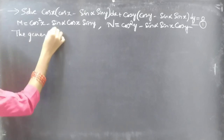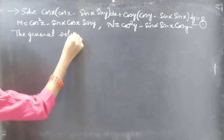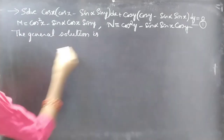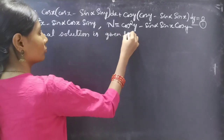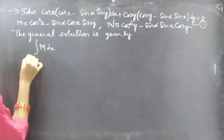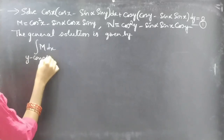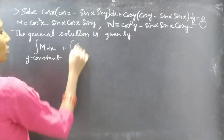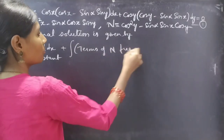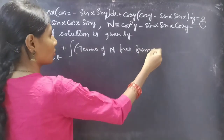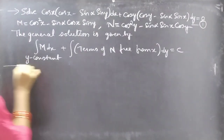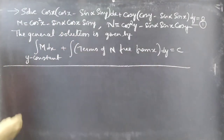Since the given differential equation is exact, we will find the general solution. The general solution is given by: integral of M dx treating y as constant, plus integral of terms of N free from x, with respect to dy, equals c.